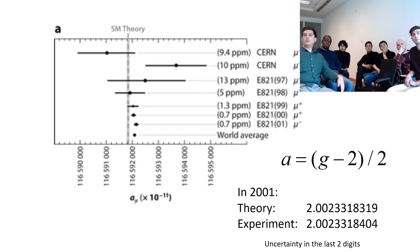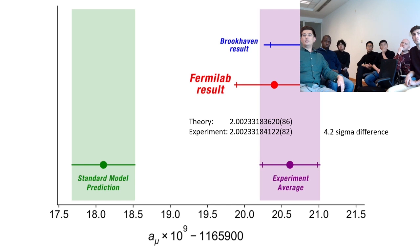What the next generation of experiments are doing now is basically to make a much more precise prediction. So this A thing is just defined over here - it's just the difference from two. You subtract two from g and then divide by two. And so these are the latest results. Basically the results still show some quite a big difference to the standard model prediction - so called 4.2 standard deviations different, which is still quite a lot.